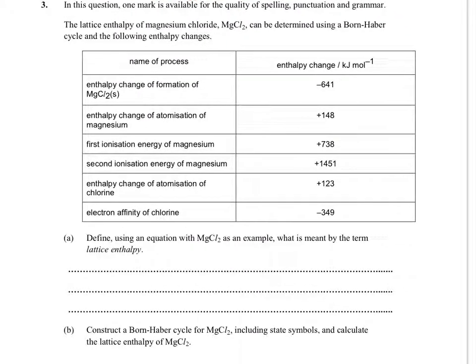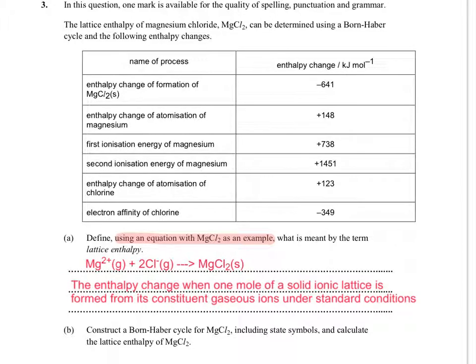So the first thing is to define using an equation with MgCl2 as an example what is meant by the term lattice enthalpy. Now, it's interesting they want an equation with MgCl2 as an example. So the first thing to do is to put the equation down, because that's what they've told us to do, and then define what's meant by the term. So literally just that isn't enough. We've got to say it in words as well, because define using an equation means do the definition and support what you're saying with an equation. So it's the enthalpy change when one mole of a solid ionic lattice is formed from its constituent gaseous ions, under standard conditions.